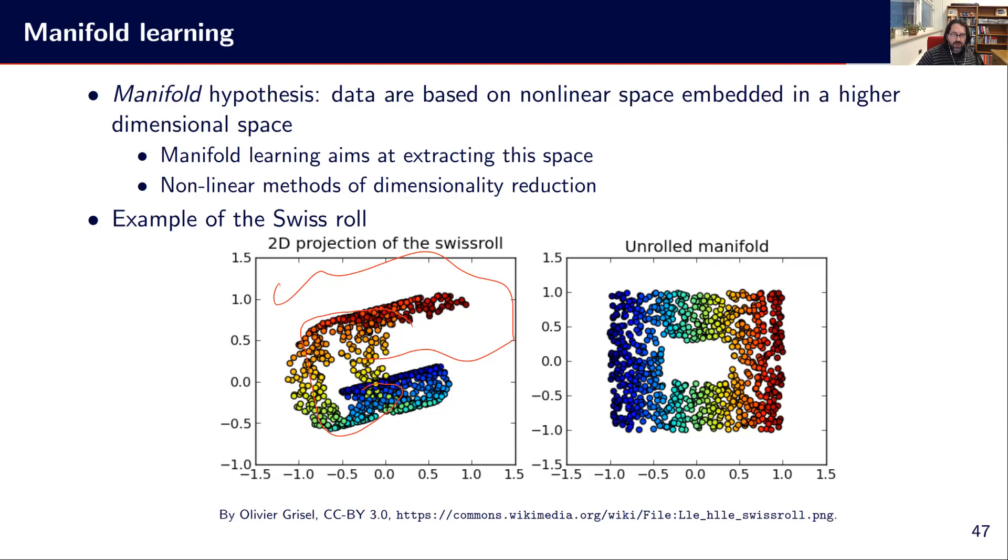So basically, we can capture this fault, this Swiss roll, this manifold in 3D, and unroll it in 2D to get that thing here. So basically, we have something that is better distributed with some hole in the middle, but that's fine. So the manifold here is in 2Ds, but it is organized, it is in a 3D space. And we can get something much more complex in the high dimensionality.